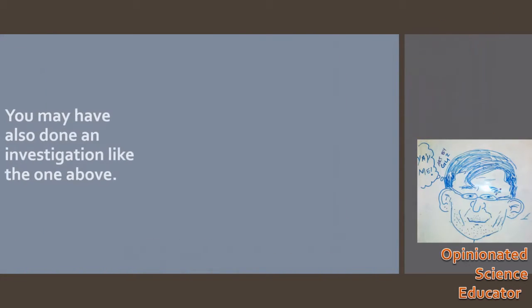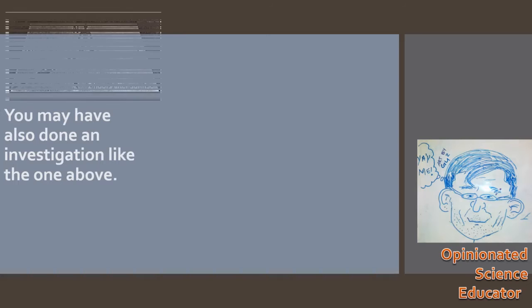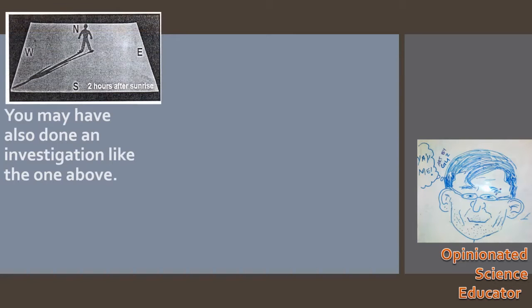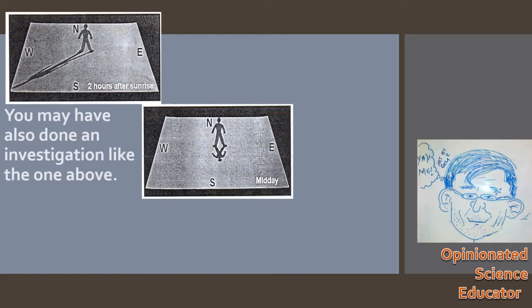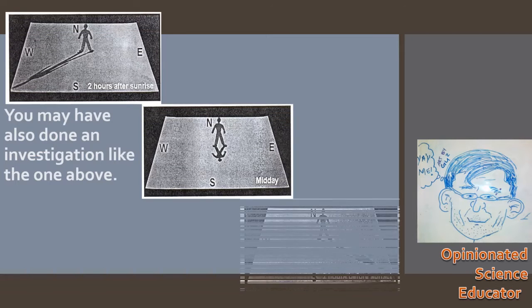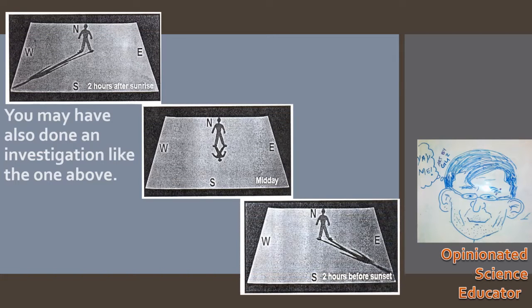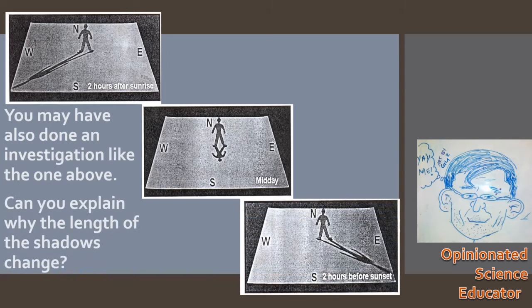Maybe your teacher also asked you to do an investigation like the one I'm about to show you — to cut out those figure men and let them stand two hours after sunrise, at midday, and two hours before sunrise. Now look at the shadows. Can you explain why the length of the shadow changes? I'd like you to try and do this now, so write down your answer.